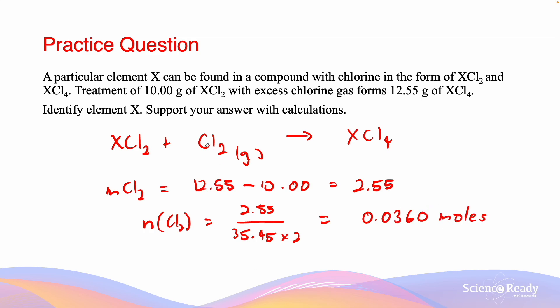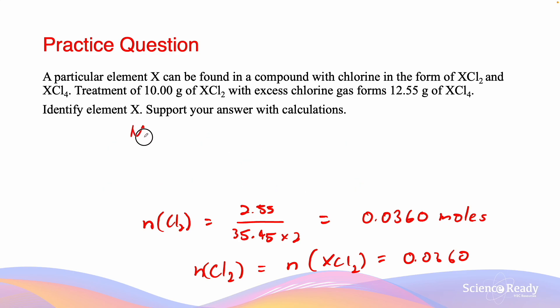We know that according to the stoichiometric ratio of our equation, the moles of Cl2 equals the moles of XCl2, which equals 0.0360. The molar mass of XCl2 is therefore equal to 10 divided by 0.0360, and that equals 278.04 grams per mole.